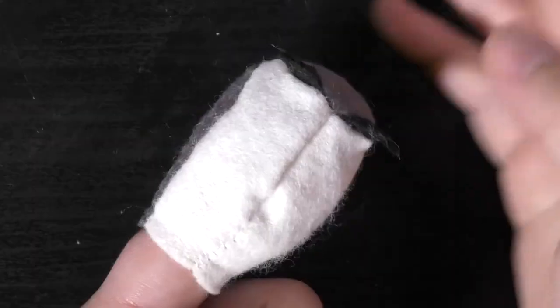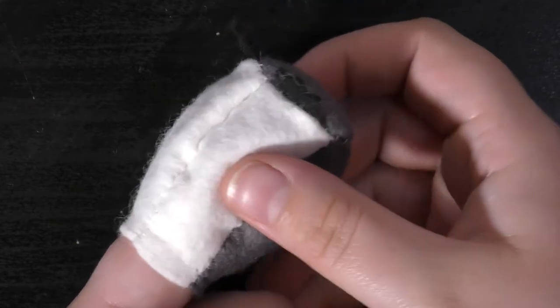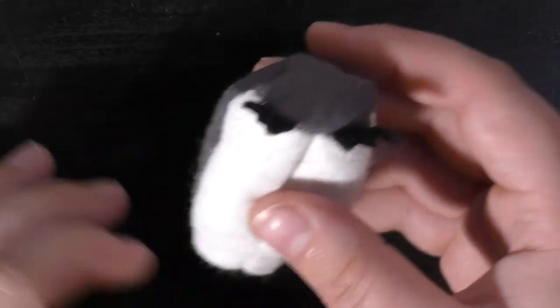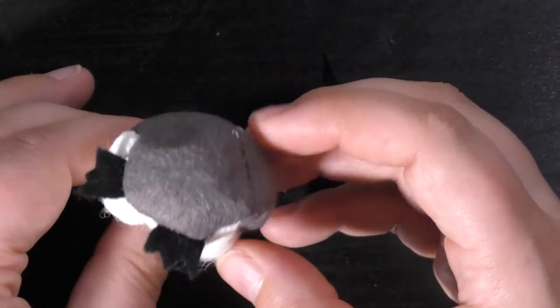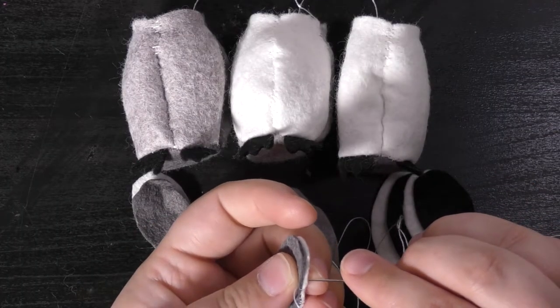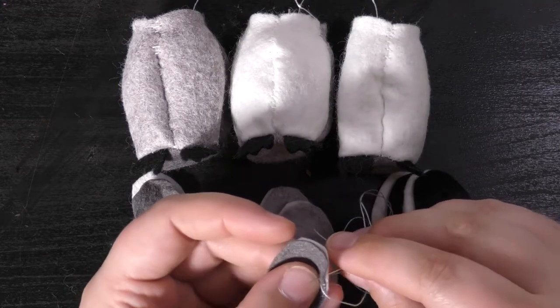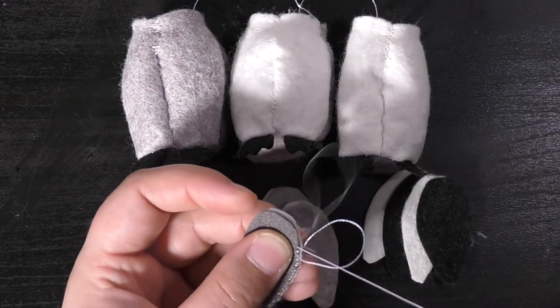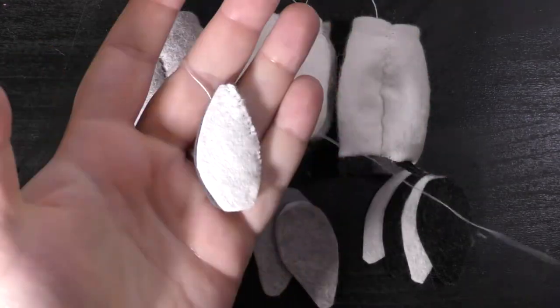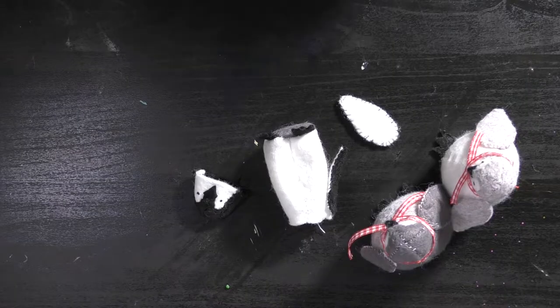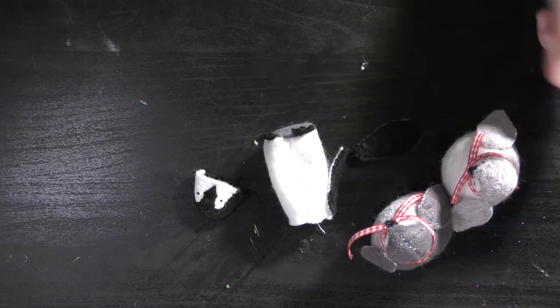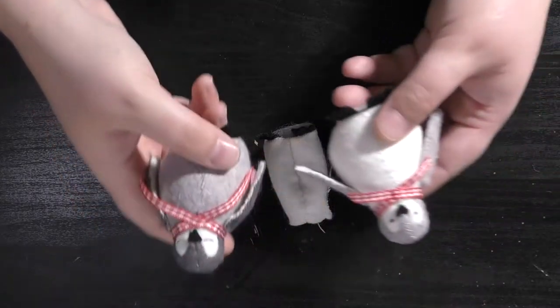So when you've finished stitching your base on and you turn the body the right way around, you'll have something that looks a little bit like this. All the body pieces and the bases are sewn together, and I'm doing more overhand stitching around the front and the back of the wing pieces.